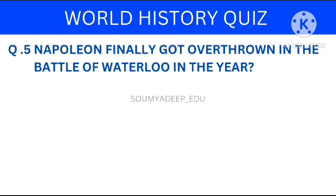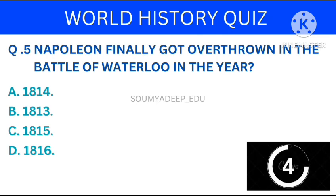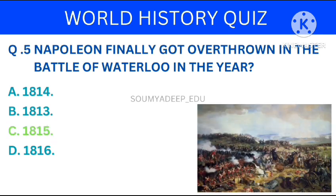Napoleon finally got overthrown in the Battle of Waterloo in the year. The options are: 1814, 1813, 1815, 1816. Your time starts now. The answer is 1815.